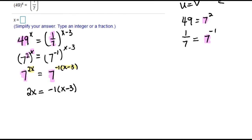I'm going to use the distributive property to distribute that negative 1. That's negative x plus 3. Now I have a linear equation. I want all the x's on the same side, so I'm adding x. That gives me 3x equals 3. Divide both sides by 3, and I get my solution of x equals 1.